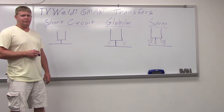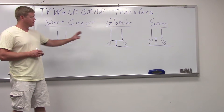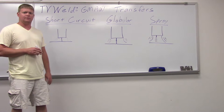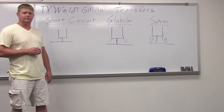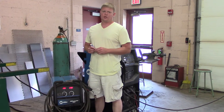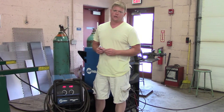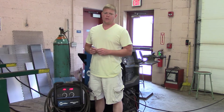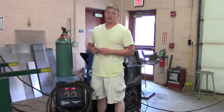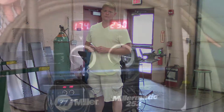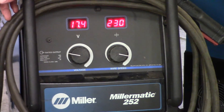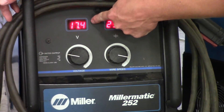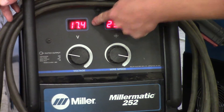We'll go out in the lab and take a look at each one of these and get a close-up shot. Here we are at the machine. We're going to start off with short circuit — this is the coldest metal transfer system. Let's take a look at our settings here on the machine. We're going to have our wire feed at 230 inches per minute and our voltage at 17.4.